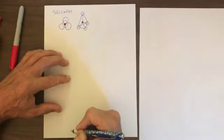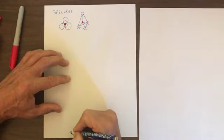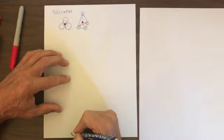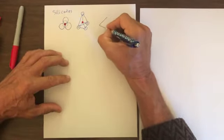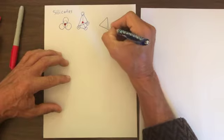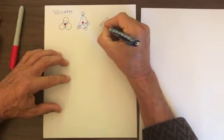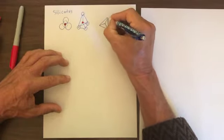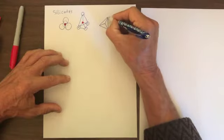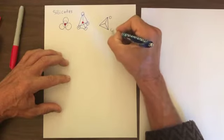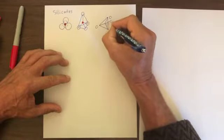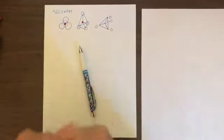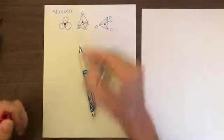A simplifying way of drawing silicate tetrahedra is just to draw a triangle like this, and then the apex of the tetrahedra like that. Each one of these intersections is an oxygen — that one, that one, that one, and this one.